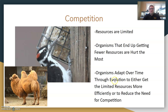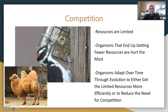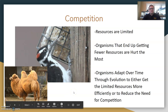Organisms adapt over time through evolution to either get limited resources more efficiently or reduce the need for competition. The woodpecker has a long tongue to help it reach different types of bugs that other birds wouldn't be able to reach inside of dead wood — that gives it an advantage. Similarly, camels have humps with fat stores that mean they don't have to eat as frequently in the desert environments they live in, so they just don't need resources as frequently.